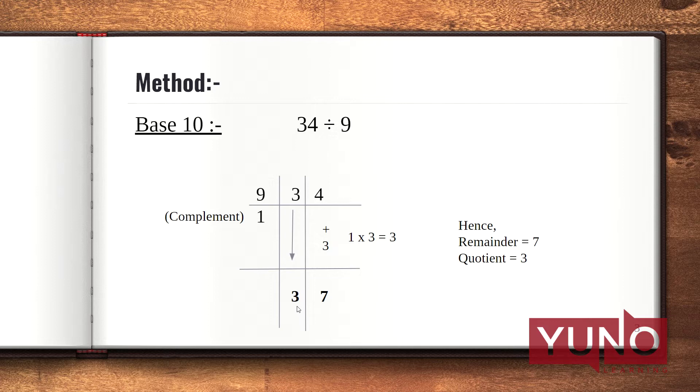The next step involves multiplying this 3 with the complement of your divisor and adding it to the next digit. The first digit of dividend is 3, and I have multiplied 3 with 1, that is the complement of 9. Now 1 multiplied with 3 gives me 3, and I have added this to the next digit, that is 4. This gives 7. Remember, I get my remainder as 7 and quotient as 3.